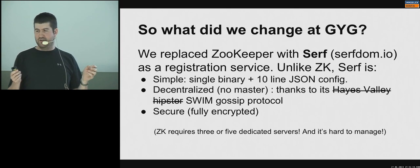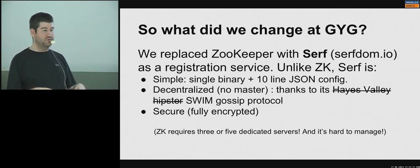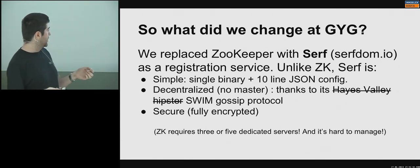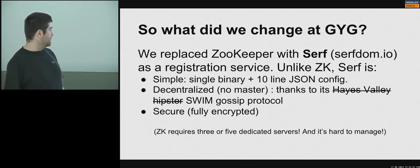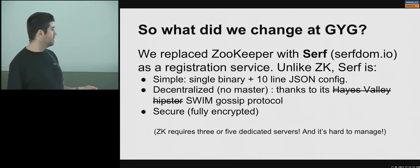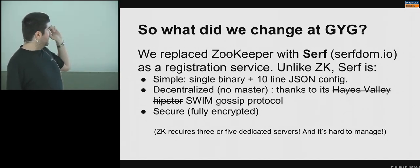With Serf you just need to know at least one initial server to connect to, so we put three and hopefully at least one of the three will be up. It's also encrypted, whereas with ZooKeeper you need to firewall everything. So we just patched the initial open-source code from Airbnb and put it in our own repository.